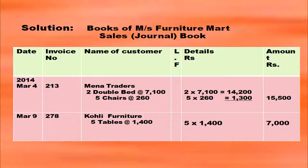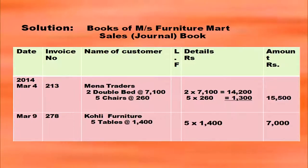For Mina Traders: two double beds at Rs. 7,100 each gives 2 × 7,100 = 14,200. Five chairs at Rs. 260 each gives 5 × 260 = 1,300. Total net amount: 14,200 + 1,300 = 15,500 in the amount column. For March 9th, Kohli Furniture: five tables at Rs. 1,400 each gives 5 × 1,400 = 7,000 net amount in the amount column.